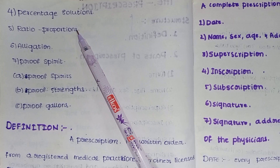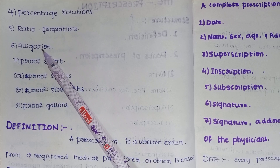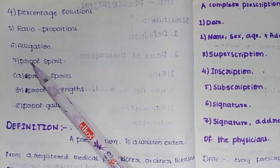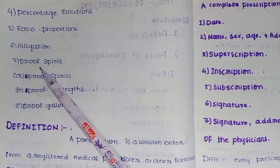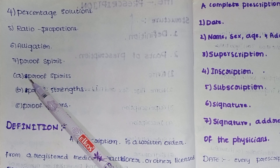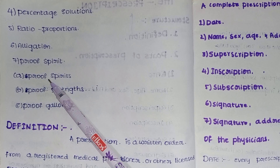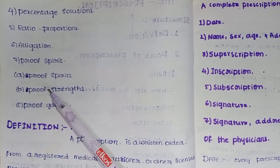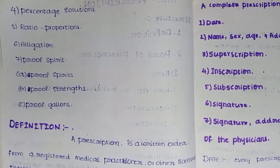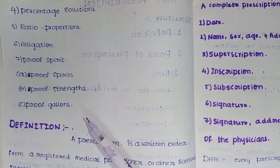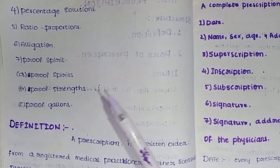The solution is proportion — for two different things we calculate the ratio. And next, allegation. And next, proof spirit — in proof spirit there are mainly three types: proof spirits, proof strength, and proof gallons. These are the ways of calculating, which is the main thing of proof spirit.